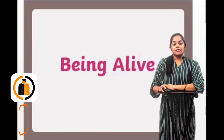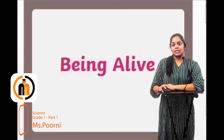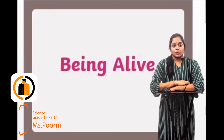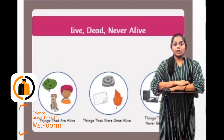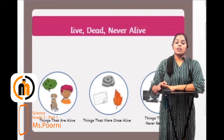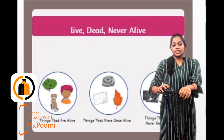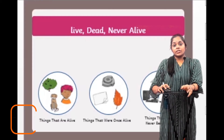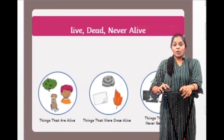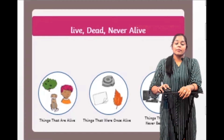Welcome to the very first topic of science: being alive. There are three things we are going to see. The things that are alive are given in the first circle, as you see. There is a tree, a dog, and a boy — these are the living things, they are alive.